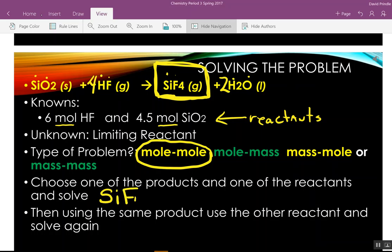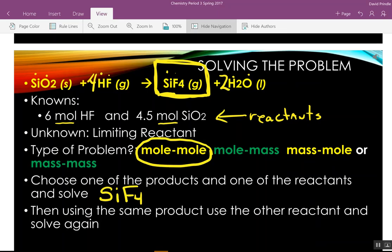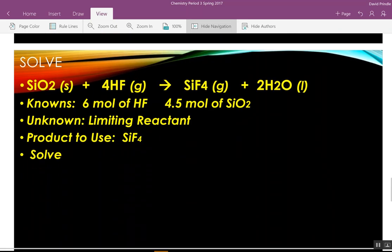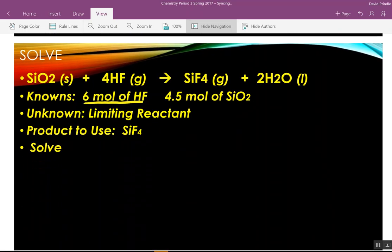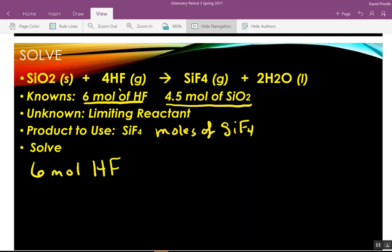So, I'm going to take SiF4 as my product. And so, what we're going to do is solve this up. And it will become fairly clear as we go through here. So, here's what we know. We have six moles of hydrogen fluoride. We have four and a half moles of silicon dioxide. We want to figure out which one of these two is the limiting reactant. So, we're going to see how much silicon tetrafluoride it will make.